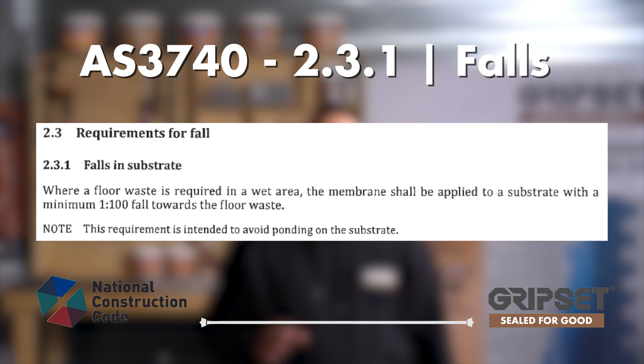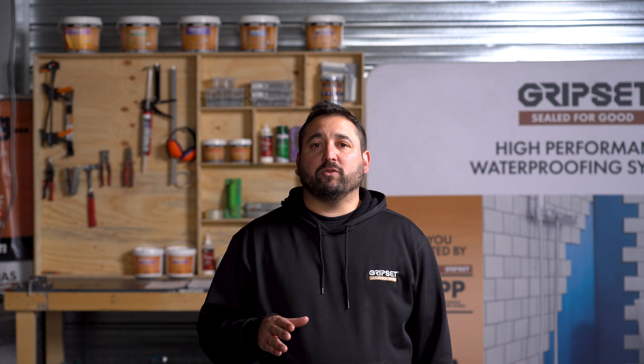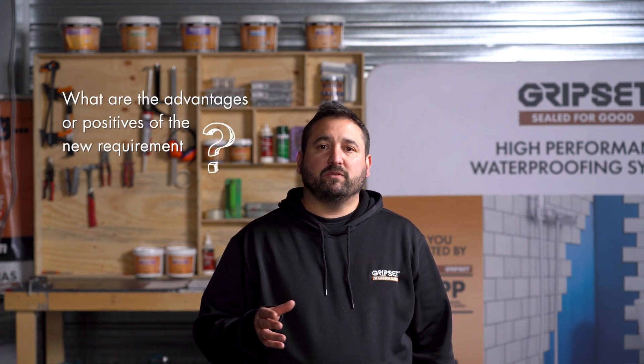So how has this changed from the previous standard? The change relates specifically to falls relative to the waterproofing system, as defined under point 2.3.1, which states: where a floor waste is required in a wet area, the membrane shall be applied to a substrate with a minimum 1 in 100 fall towards the floor waste. Using the previous detail from AS3740:2010, it wasn't uncommon to see a membrane applied in a shower over a surface without gradient or any falls built in towards drainage. Now the membrane must be applied over a surface with a fall. Waterproofing over the screen can be considered best practice but is not mandatory.